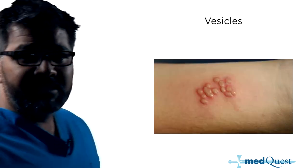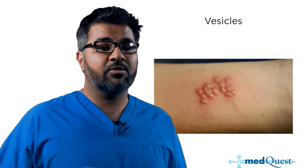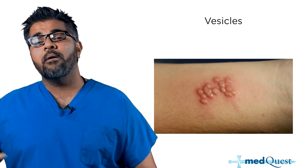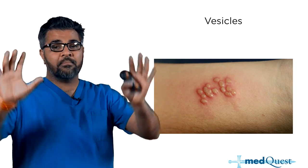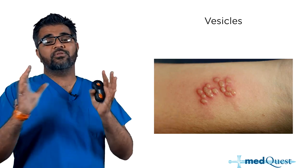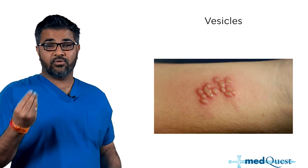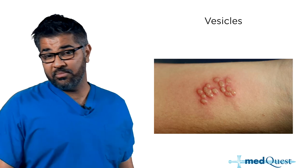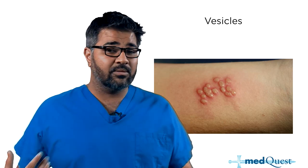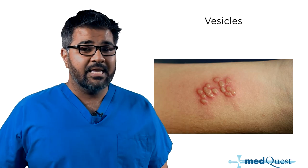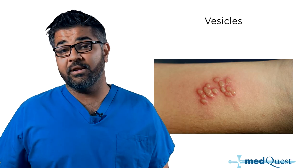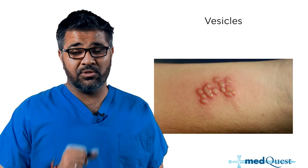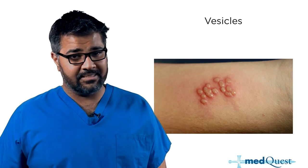Vesicles can be other things as well, but remember, the only other thing you're going to see that's similarly vesiculated — could be on the legs or somewhere on the body — is dermatitis herpetiformis, which is associated with celiac disease.